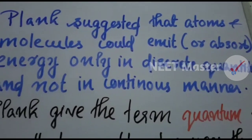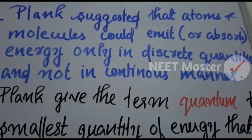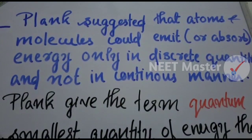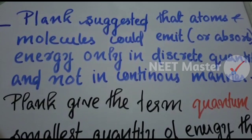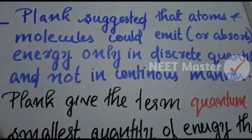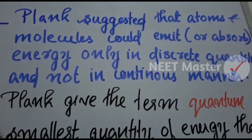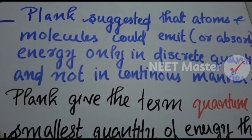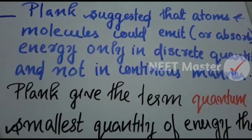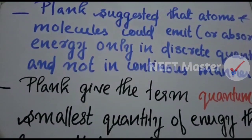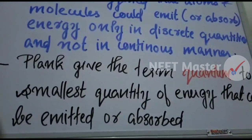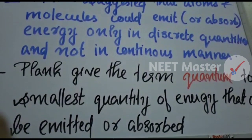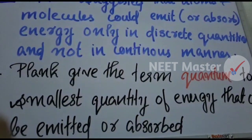Planck proposed that atoms and molecules could emit or absorb energy in discrete quantities, not in a continuous manner. We previously thought energy was emitted continuously, but according to Planck, atoms and molecules emit energy in particular discrete quantities. This is not a fixed continuous quantity — it is a quantum. Planck's quantum is the smallest quantity of energy.